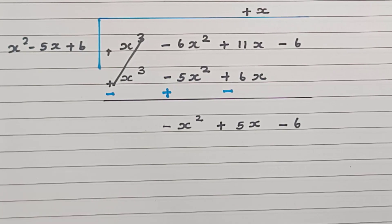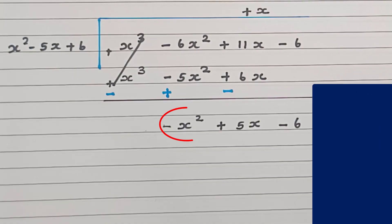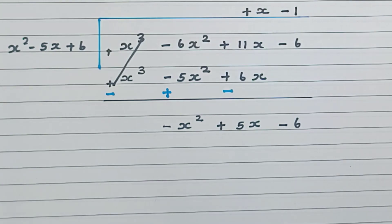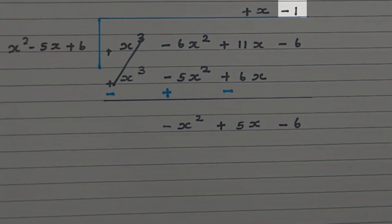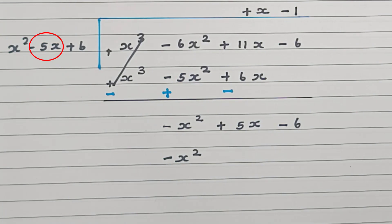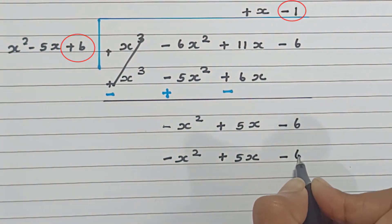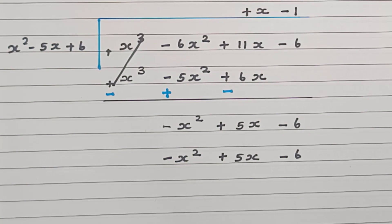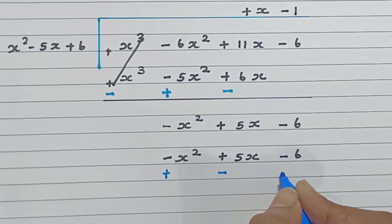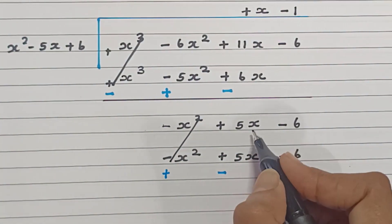Bring down the next term, minus 6. Now minus x squared plus 5x minus 6 is our new dividend. Take the first term minus x squared and divide by x squared, which gives us minus 1. Write minus 1 in the quotient. Multiply each term of the divisor by minus 1: x squared times minus 1 gives minus x squared, minus 5x times minus 1 gives plus 5x, and plus 6 times minus 1 gives minus 6. Change symbols and subtract: minus x squared becomes plus x squared, plus 5x becomes minus 5x, and minus 6 becomes plus 6. So minus x squared plus x squared is 0, plus 5x minus 5x is 0, and minus 6 plus 6 is 0.